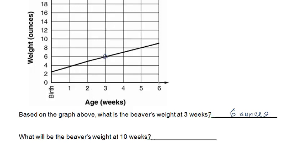So at six weeks, the beaver is nine ounces. At seven weeks, it would be ten ounces. At eight weeks, eleven. At nine weeks, twelve. And at ten weeks, most likely, the beaver would be thirteen ounces.